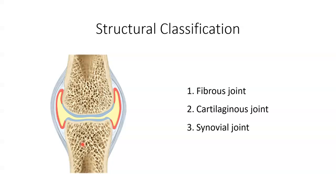Using this structural classification, joints are classified as one of three types. A fibrous joint, which has no synovial cavity, and the bones are held together by dense irregular connective tissue. A cartilaginous joint, which also has no synovial cavity, and the bones are held together by cartilage.